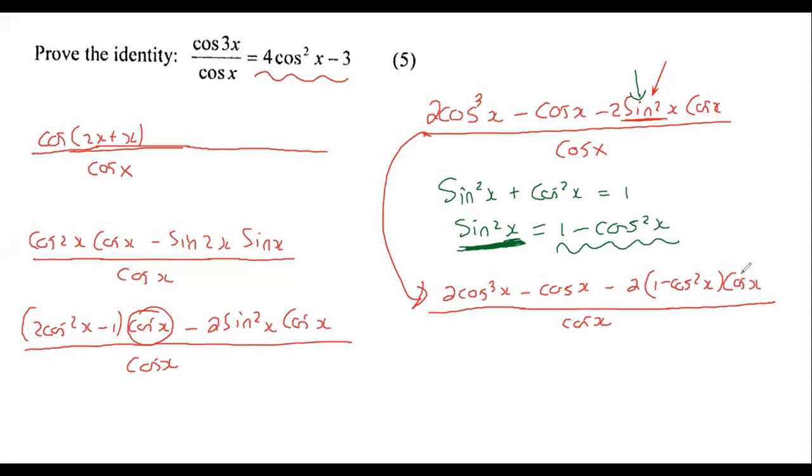Okay, I would then put this cos x over here, I would just put it in the front with the 2 for now. You don't have to do it like that. But yeah, I think that for me is just most comfortable. So that would become 2 cos cubed x minus cos x minus 2 cos x bracket, 1 minus cos squared x over cos x.